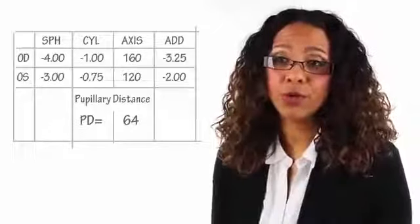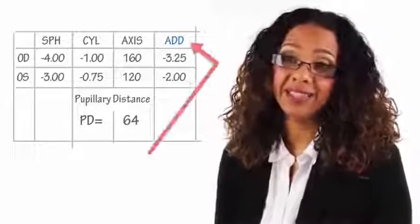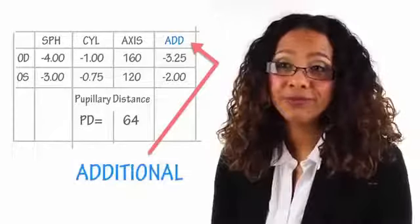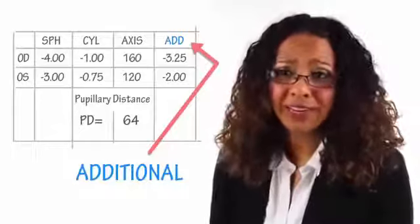Now this next term you'll see on your prescription is ADD, which stands for additional. Probably the easiest term on there, right? ADD is used for bifocal and progressive lenses, and it's something which helps the vision by adding an additional feature onto the lens to help with activities such as reading or watching television. ADD means additional.